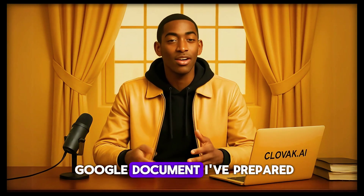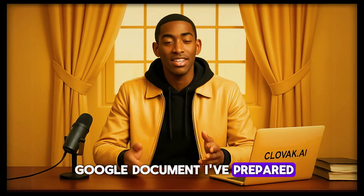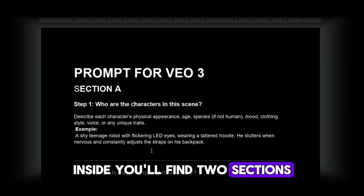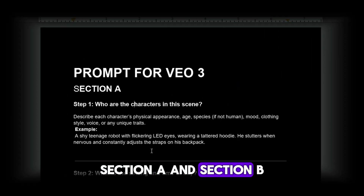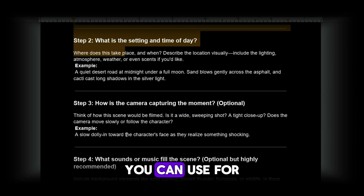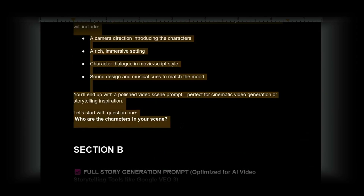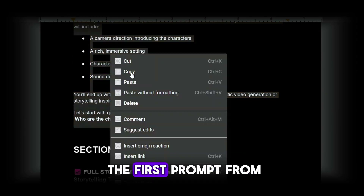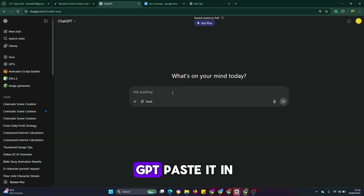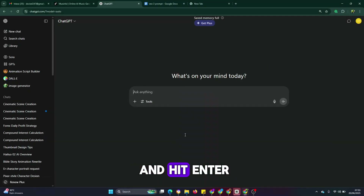Let's begin with the Google document I've prepared. Inside, you'll find two sections: Section A and Section B. Each contains different prompt styles you can use for video generation. To start, I'll copy the first prompt from Section A, head over to ChatGPT, paste it in, and hit Enter.